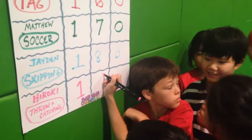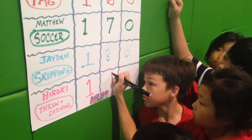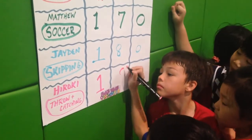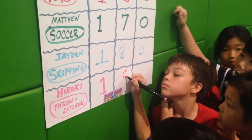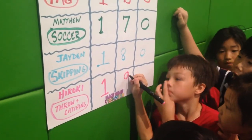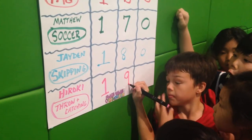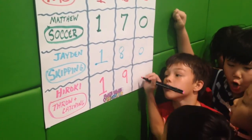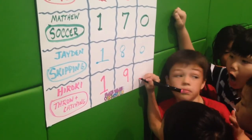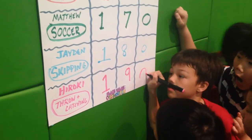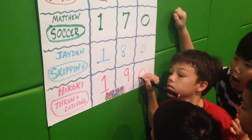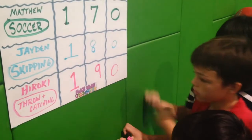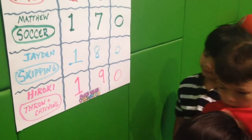Hiroki, go ahead. One hundred and what? Ninety. Okay, so you're putting the nine where, Hiroki? In the tens column. The magic moment! So Hiroki, everybody — 190 beats per minute. Well done.